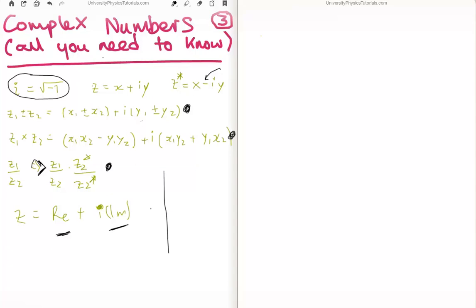OK, so on our Argand diagram the real component is here and the imaginary component is up here. And we might have something like that.